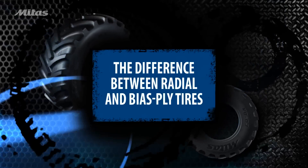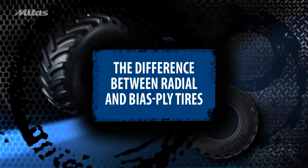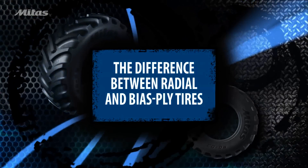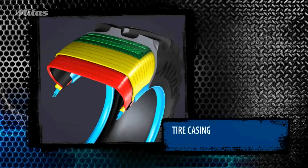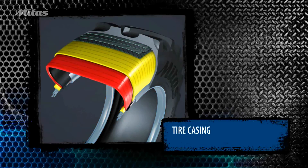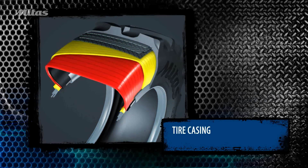The differences between radial and bias ply tires. There are two kinds of tires: older bias ply tires and newer radial ply tires.